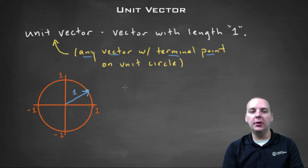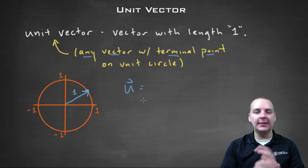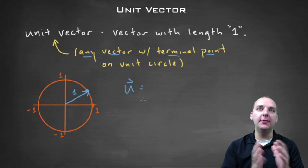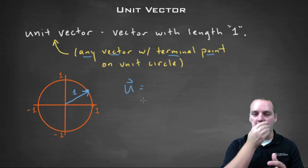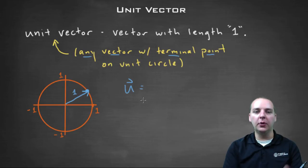So often times we'll write unit vectors with the notation vector u. Now that's not a hundred percent of the time. If you see a vector u that's not a unit vector, it's not the end of the world. But often times if we have a unit vector, many times we'll write it with the letter u, u being for unit vector.